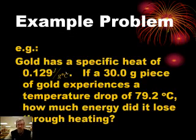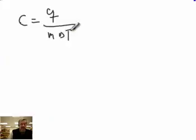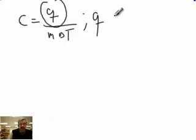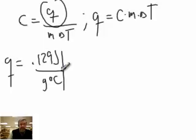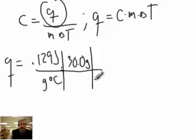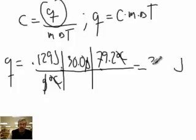Here's another example problem. Gold's specific heat is 0.129 joules per gram per degree C. A 30 gram piece of gold experiences a temperature drop of 79.2 degrees C — how much energy did it lose through heating? Specific heat is Q divided by mass times delta T, so Q equals C times M times delta T. Plugging in: 0.129 joules per gram per degree C times 30 grams times 79.2 degrees C. The grams and degrees C cancel, leaving joules — the answer is 307 joules absorbed.